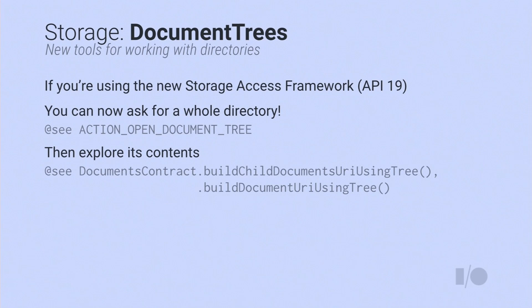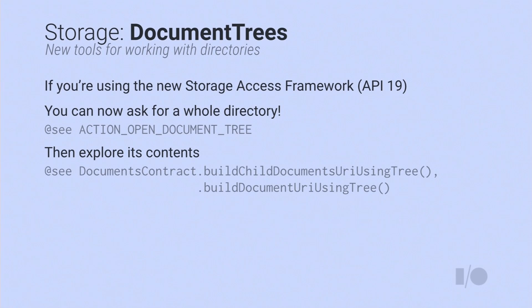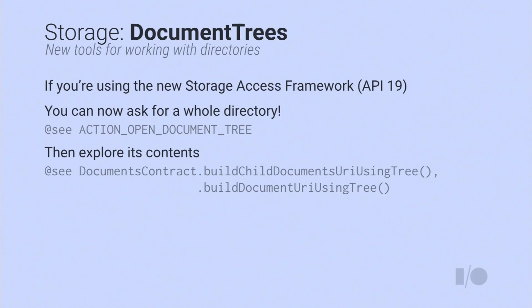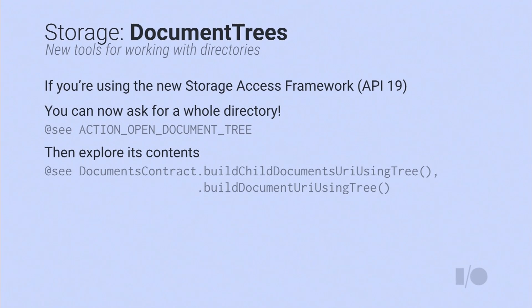Also in the framework are improvements to the Storage Access Framework, introduced in KitKat API 19. Previously, if you wanted to pop up a file browser and ask for a directory, you couldn't. Now you can. Once an app receives a whole directory from the picker, you can explore the entire sub-tree of documents and do whatever you need with that whole directory.